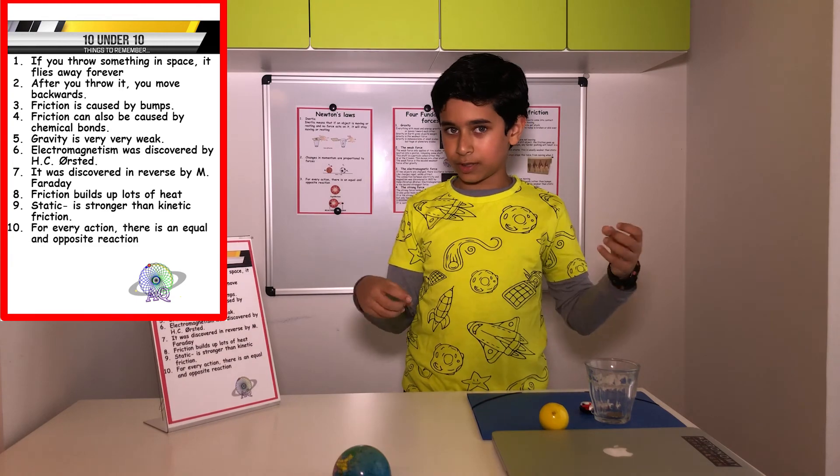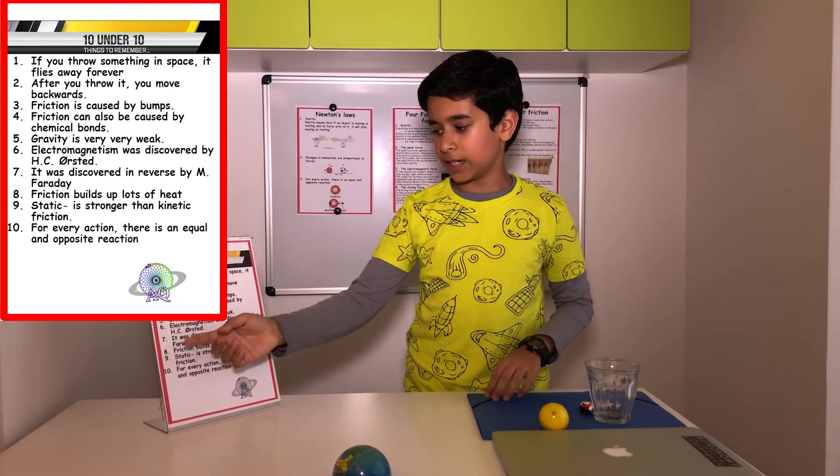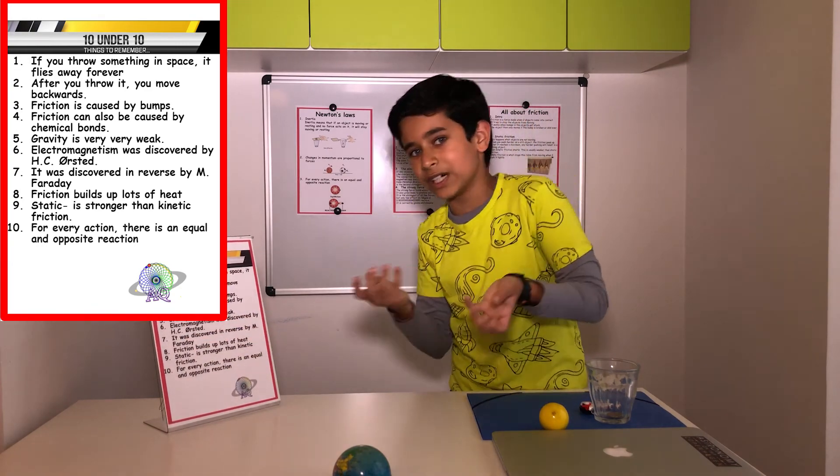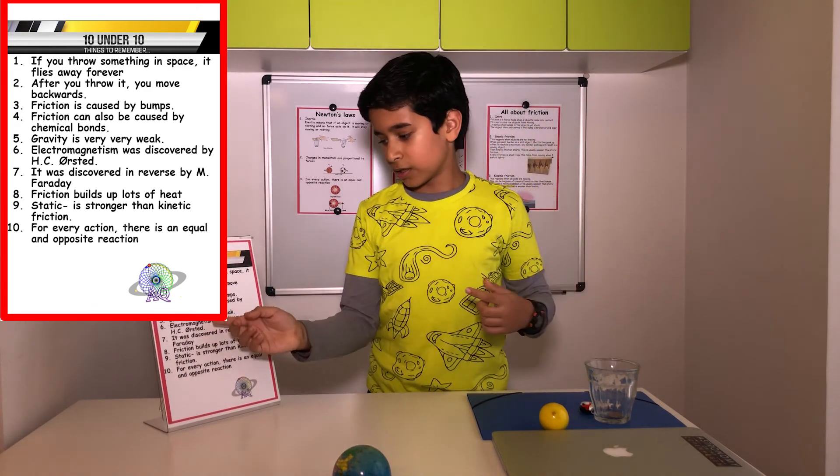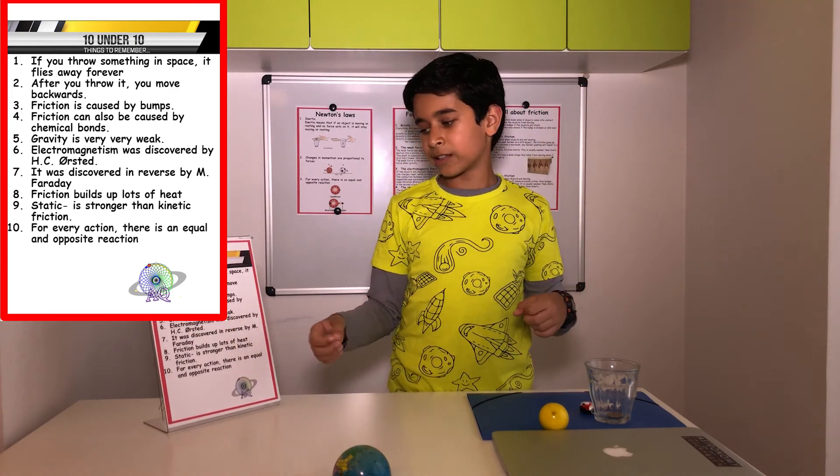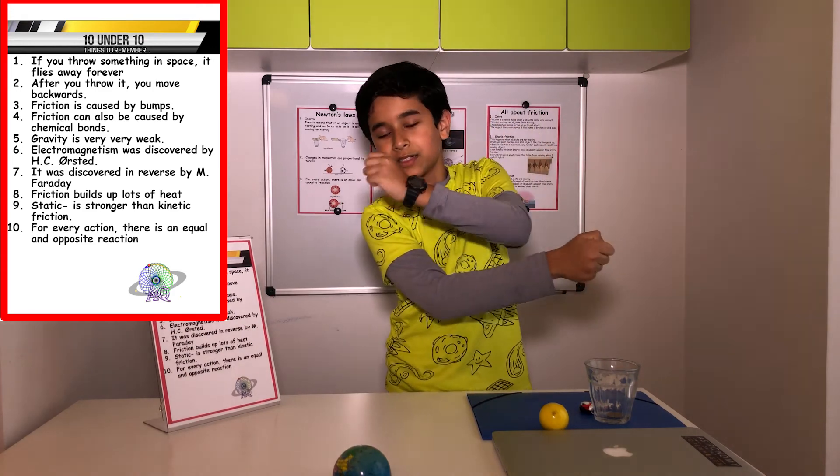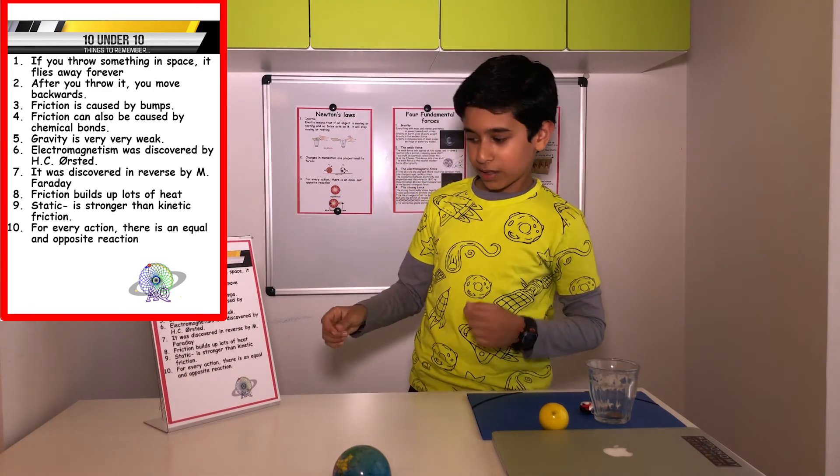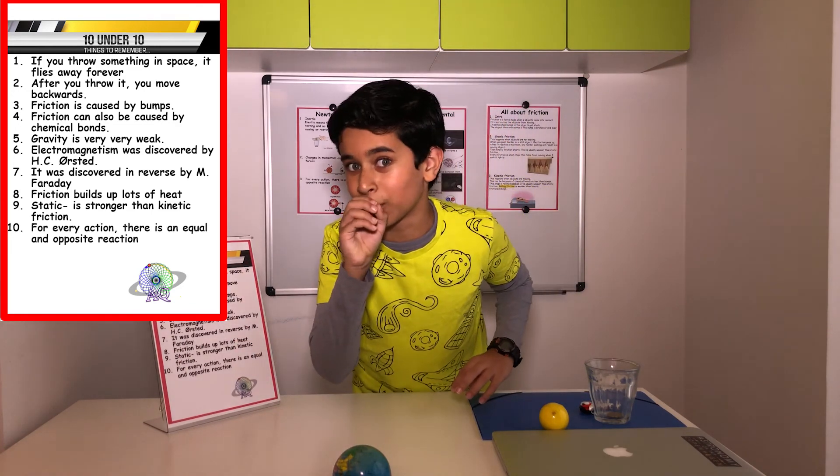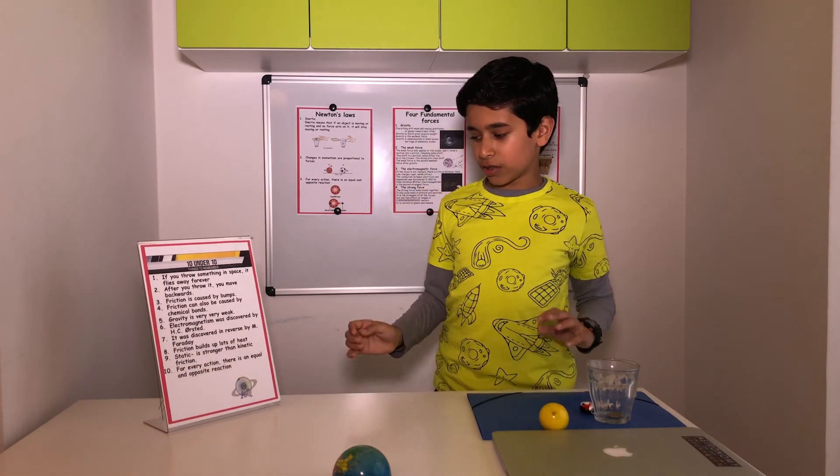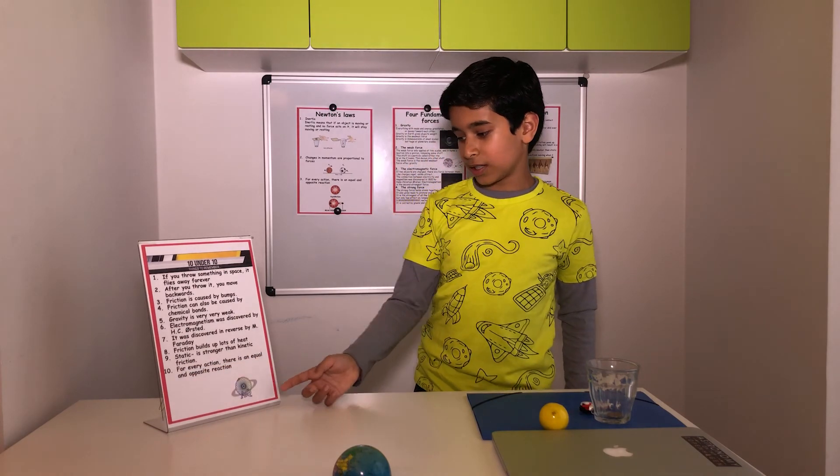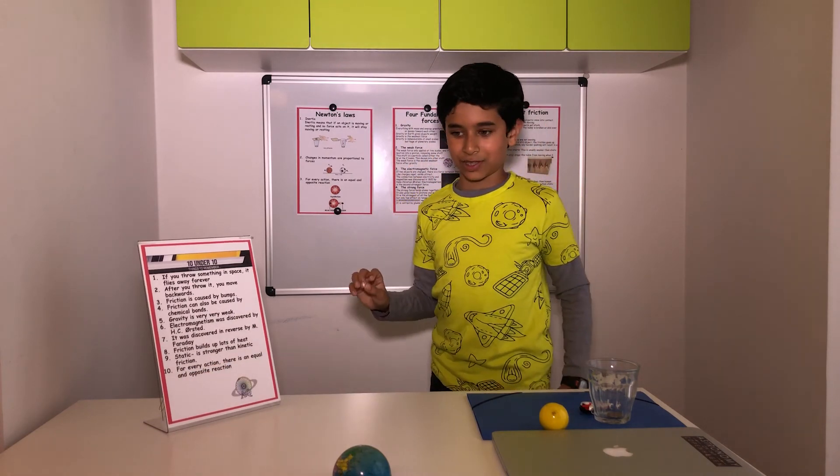Electromagnetism, the connection between electricity and magnetism, was discovered by Hans Christian Oersted. The reverse connection between magnetism and electricity was discovered by Michael Faraday. Friction builds up lots of heat. You saw that with the rockets. Static friction is stronger than kinetic friction. For every action, there is an equal and opposite reaction. Remember the balloon?